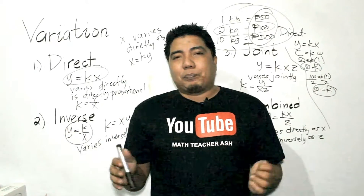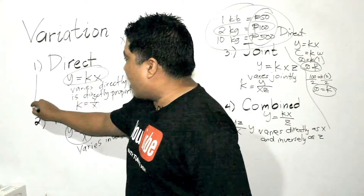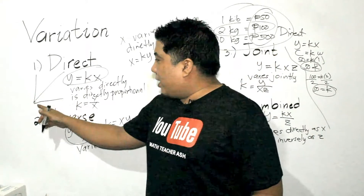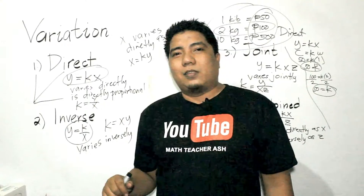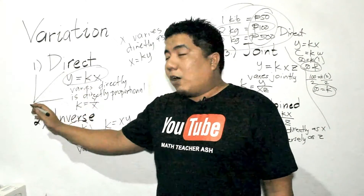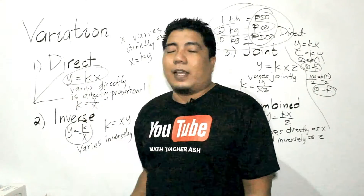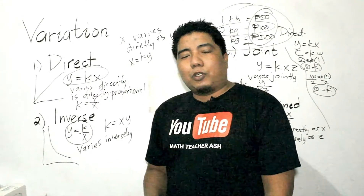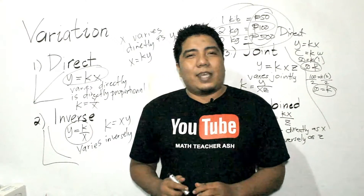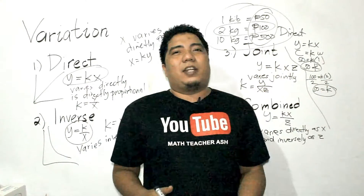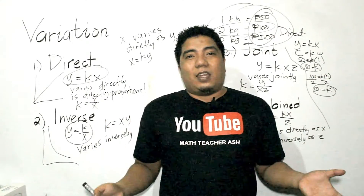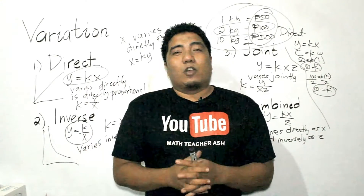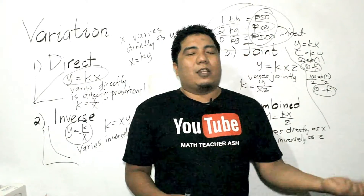For the graph of direct variation, as x increases and y increases, it forms a straight upward line. For inverse variation, the graph curves — it's a hyperbola. For joint and combined variation, since we're considering three or more variables, the graph would be 3D with a y-axis, x-axis, and z-axis, which could be confusing, so we won't cover those graphs here.